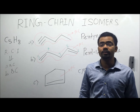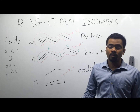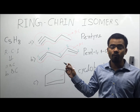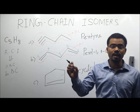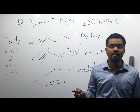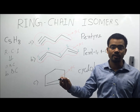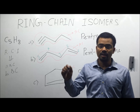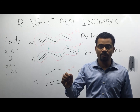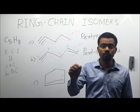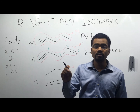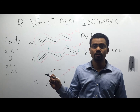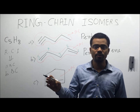In conclusion, for ring chain isomers, one molecule must have an open chain as the parent chain and the other molecule must have a closed chain as the parent chain. Ring chain isomers is a part of structural isomers. Thanks for watching.